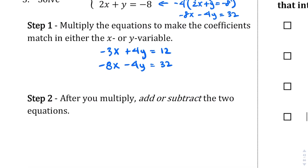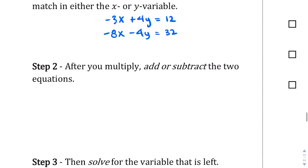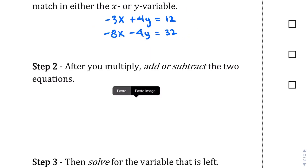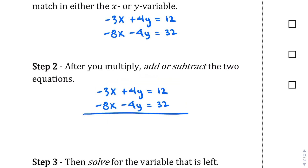And then we're going to add or subtract the two equations here. We're going to put negative 3x minus 8x — if we add those together, we get negative 11x. And on the other hand, here we get 44. Divide both sides by negative 11, and get x equals negative 4.